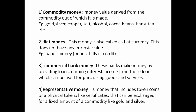Next, fiat money — also called fiat currency. This does not have any intrinsic value, meaning it is not backed by any physical commodities like gold and silver. It is based on the relationship between supply and demand rather than the materials. For example, paper money and the US dollar are based on supply and demand.